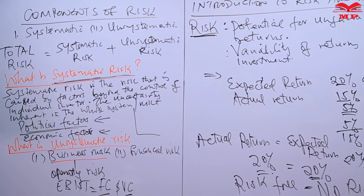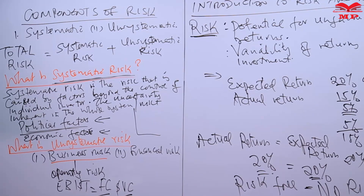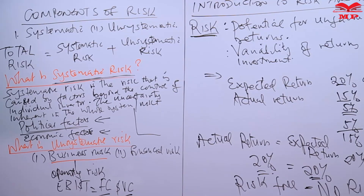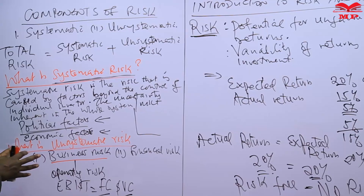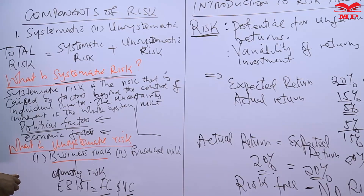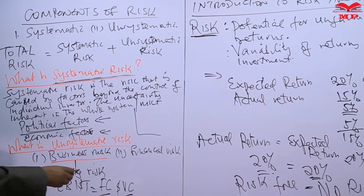Business risk arises due to chances of variability in return caused by a firm's pattern of usage of funds. Every business establishment mobilizes and uses funds for its operations. For example, one company may have used a large portion of its funds on fixed assets while another used only a small proportion. If you invest more in fixed assets and the company is not performing well with low profits, there is a potential for variability in returns.